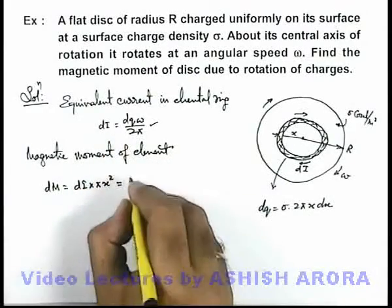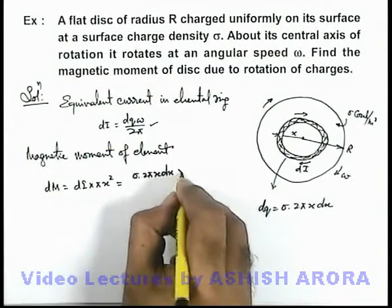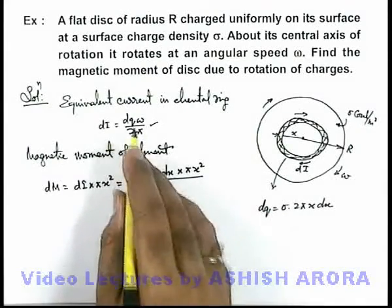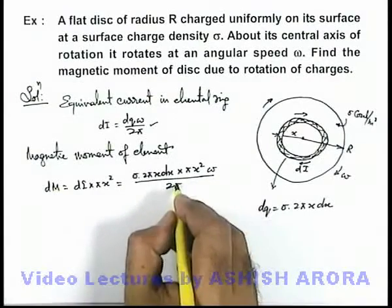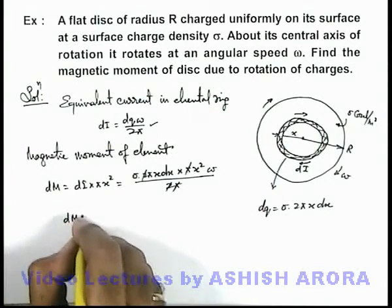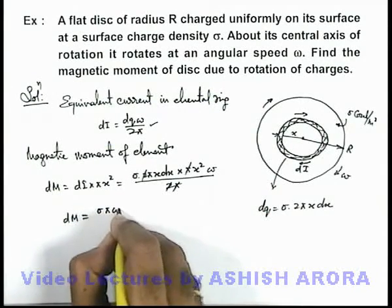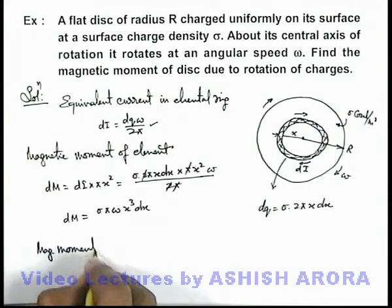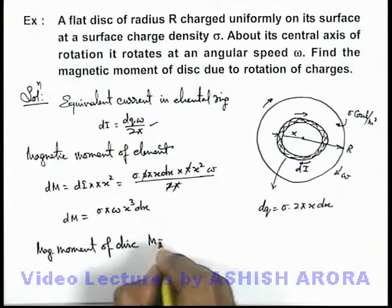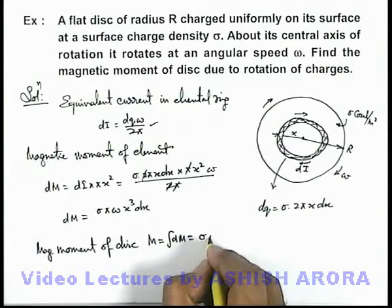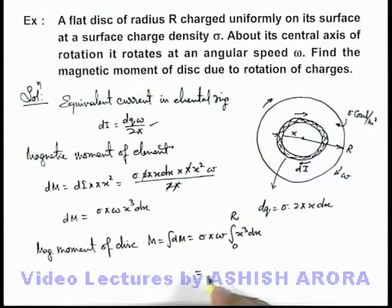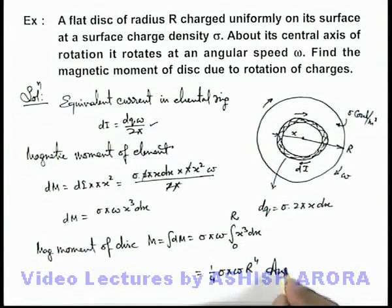So if I substitute the values, I have just left the value of omega upon 2π. If we just calculate here, π gets cancelled out, 2 also gets cancelled out. The value of dm we are getting is sigma π omega x³ dx. And the total magnetic moment of disc can be calculated simply by integrating this, which is integration of dm. Here sigma π omega are constant, so it is integrated x³ dx from zero to R. On integrating you can see it will be x⁴ by 4, on substituting limits we are getting 1/4 sigma π omega R⁴. That will be the answer to this problem.